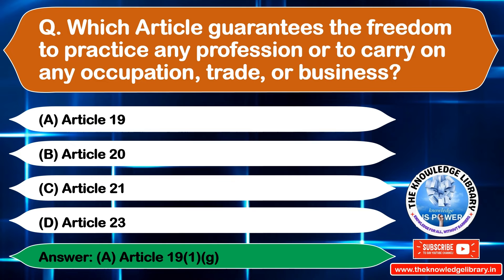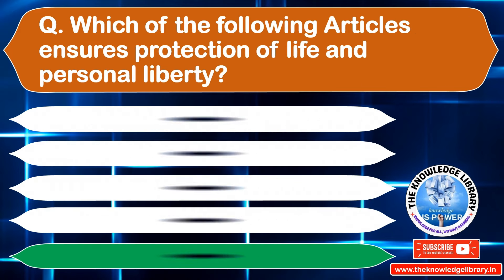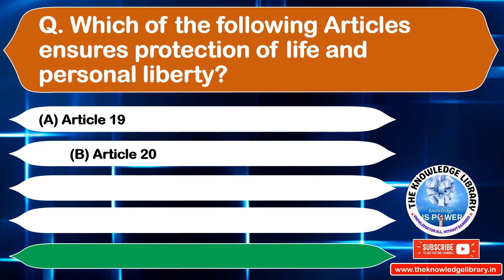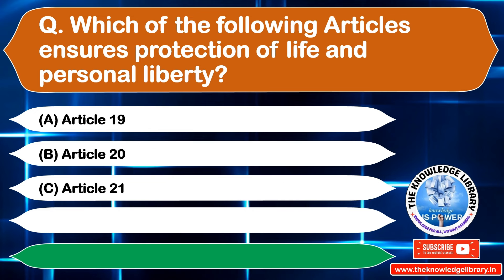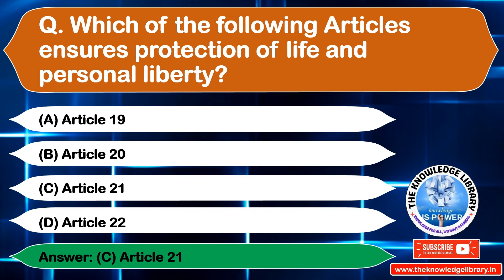The next question is: which of the following articles ensures protection of life and personal liberty? Option A: Article 19, Option B: Article 20, Option C: Article 21, Option D: Article 22. The correct answer is Option C: Article 21.